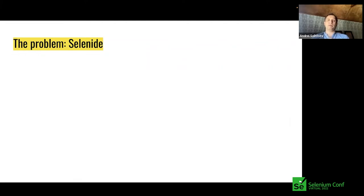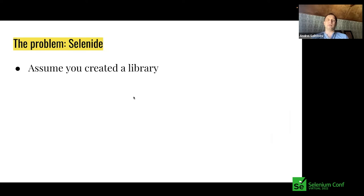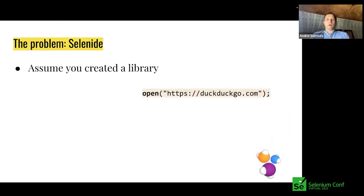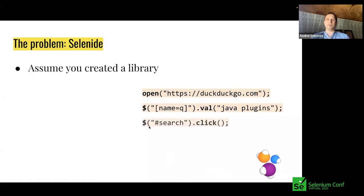Another example familiar to me: Selenide is a library built on top of Selenium, specifically designed for UI testing. Its API looks like this — in some sense it's similar: you open a browser, find elements, click or do actions. But this API was made more sophisticated and readable, exactly for tests.